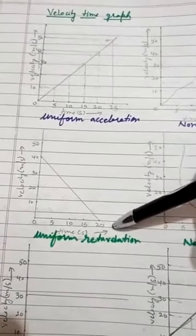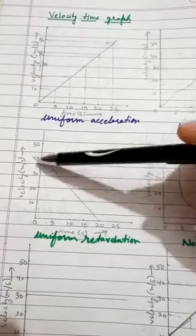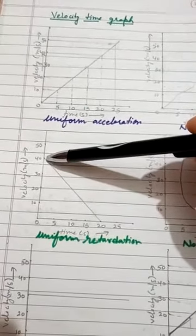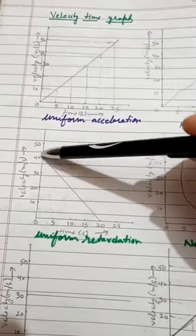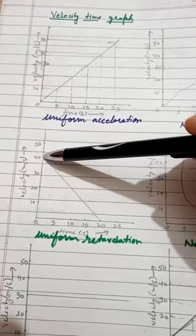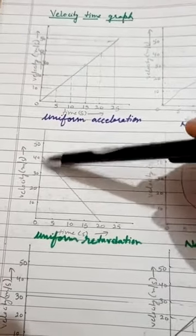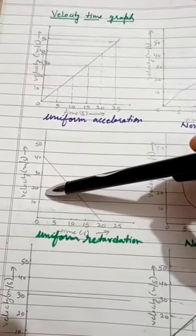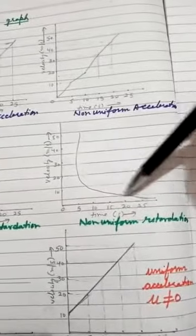The next graph is for uniform retardation, where velocity is decreasing as time increases but at a uniform rate. For example, velocity goes 40, 30, 20, 10 m/s with the same time intervals — the body decreases velocity by 10 m/s every 5 seconds. So the graph for uniform retardation is also a straight line, but with a negative slope.